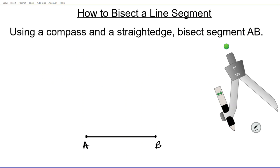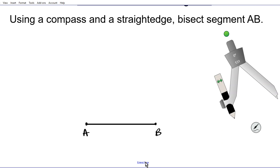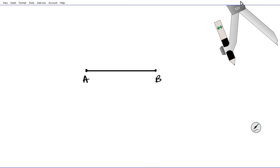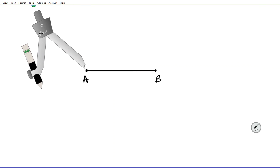The instructions are: using a compass and a straight edge, bisect segment AB. So let's say we have this segment AB here and we're to use a compass and a straight edge to bisect it. First, we're going to take our compass and place the spike on point A to begin with.